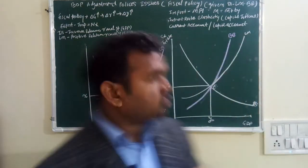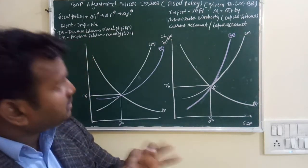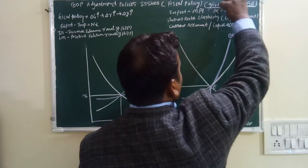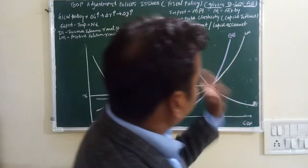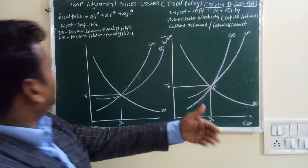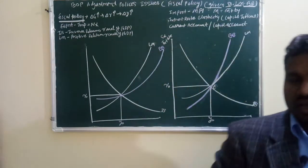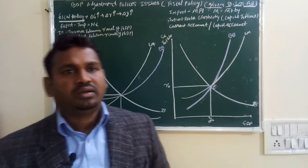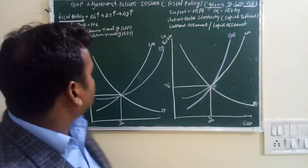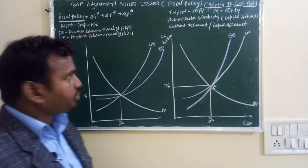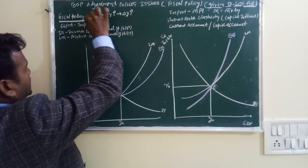This is related to the topic of Balance of Payment policy issues, specifically the IS-LM and Balance of Payment situation. Regarding fiscal policy, the government has certain tools: either the government increases expenditure or changes taxation. If there is an inflation situation, the government uses its expenditure policy accordingly.